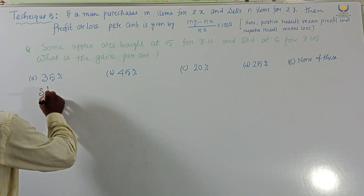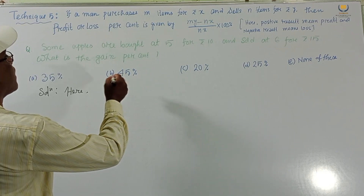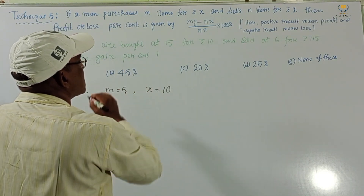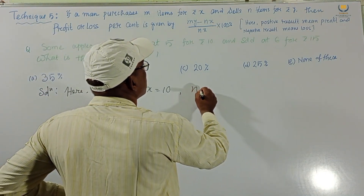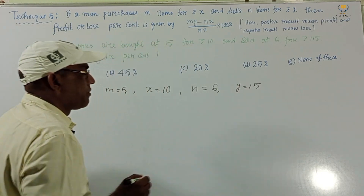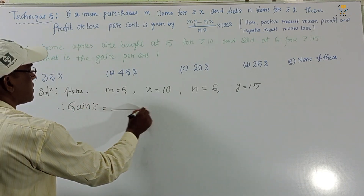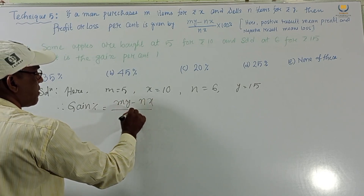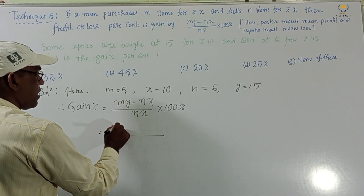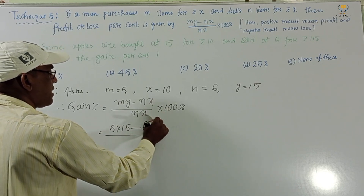Solution: Here m equals 5 and x equals rupees 10. n equals 6 and y equals rupees 15. Therefore gain percent equals (my minus nx) by nx into 100 percent, using our formula.